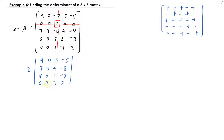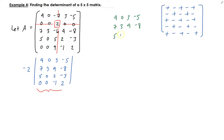Now let's focus on finding the determinant of this four by four matrix: [4, 0, 3, -5 / 7, 3, 4, -8 / 5, 0, 2, -3 / 0, 0, -1, 2]. We notice that the second column has only one non-zero value, which is 3, so we're going to use that column to find the determinant.